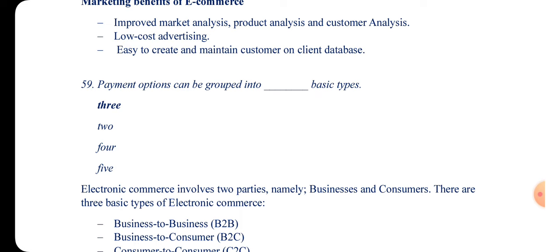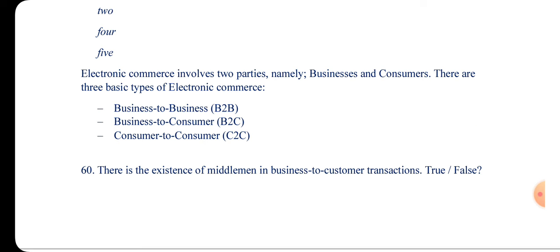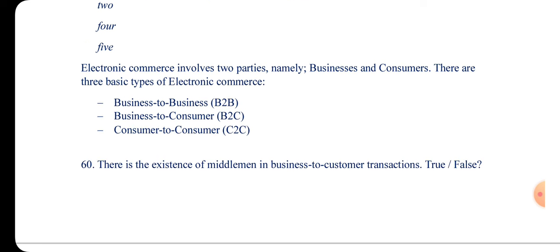Question 59: Payment options can be grouped into how many basic types? In electronic commerce there are three basic types: Business-to-Business (B2B), Business-to-Customer (B2C), and Customer-to-Business. The answer is three.